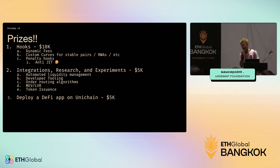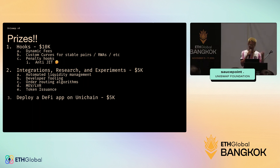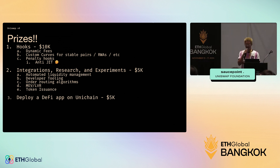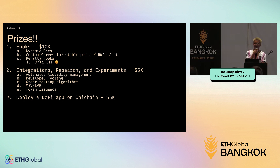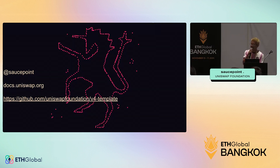Our biggest prize category is hooks — implementing a hook with a dynamic fee, custom curve, or fun value redistribution like anti-just-in-time. The second category is integrations: anything where you're using v4 as a dependency but not directly building a hook. The last category is Unichain — just build a fun DeFi app on Unichain.